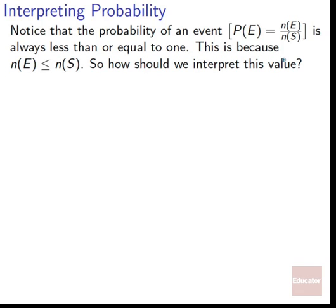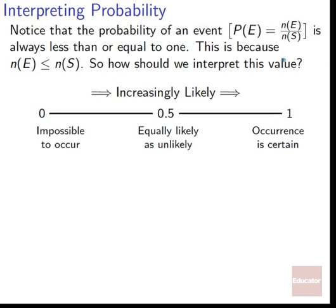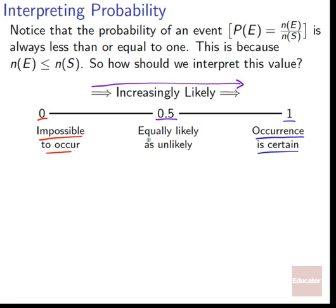So we've got a number that can be somewhere between 0 and 1. At 0, it is absolutely impossible for the thing to occur, and at 1, it is absolutely certain. As we go up from 0 to 1, it becomes more and more likely. Here in the middle at 0.5, it is equally likely as unlikely. On average, 1 out of 2 times it will wind up happening.